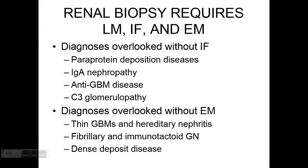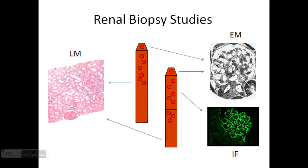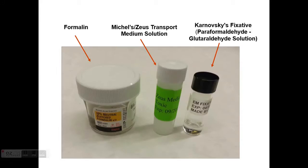We need to have these different studies done such that when we obtain tissue from a patient, right then at that time we need to split it and send it to different labs. We send a small piece to the electron microscopy lab, a small piece to the immunofluorescence lab, and the rest goes to light microscopy — the main histology lab. The tissues will end up in different vials and different fixatives or transport media.